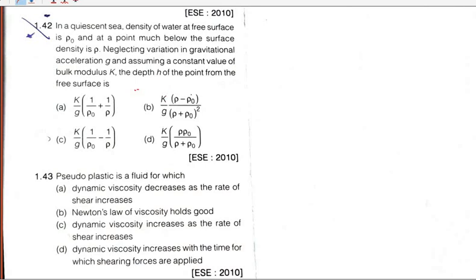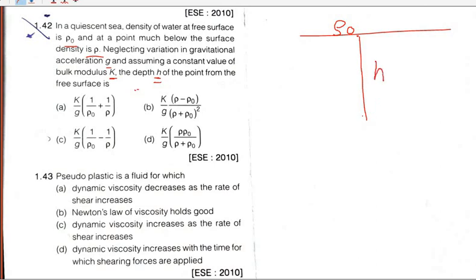In previous videos we discussed till question number 41, now it is question number 42. In this question, density of water at the free surface is rho0 and at a point much below the surface is rho. Neglecting the variation in gravitation and assuming a constant value of bulk modulus K, we need to find the depth h of the point from the free surface.